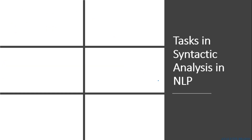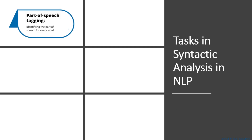Let's look at some of the tasks we perform as part of understanding natural language text in NLP. We do part-of-speech tagging, where we try to split the text into words and then annotate whether each word is a noun, verb, adjective, adverb, and so on. I will be covering all these parts in more detail in later videos.